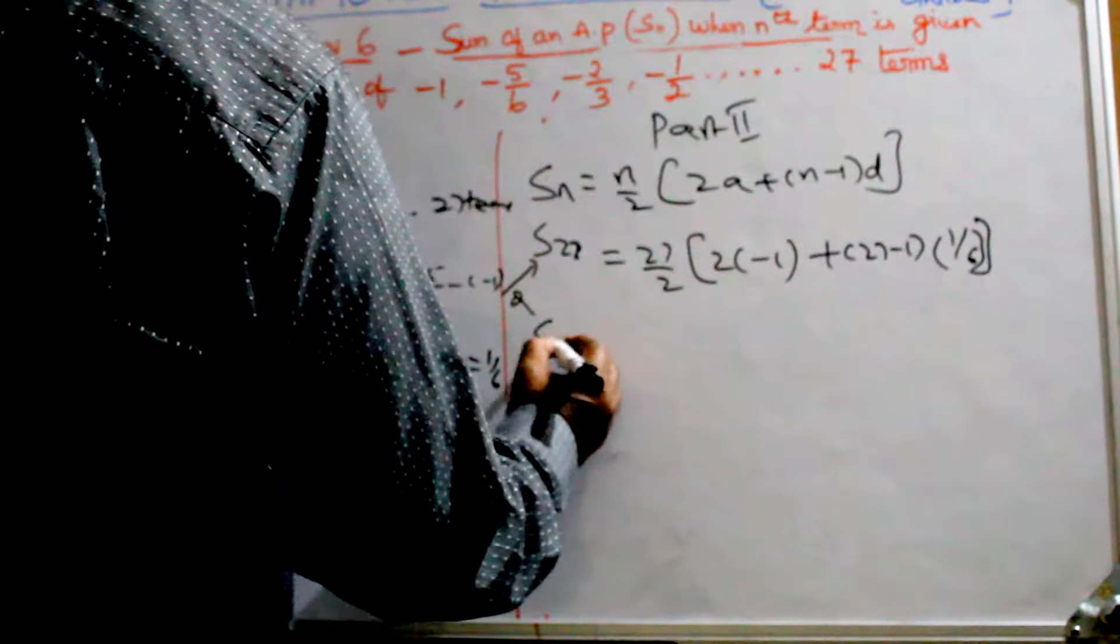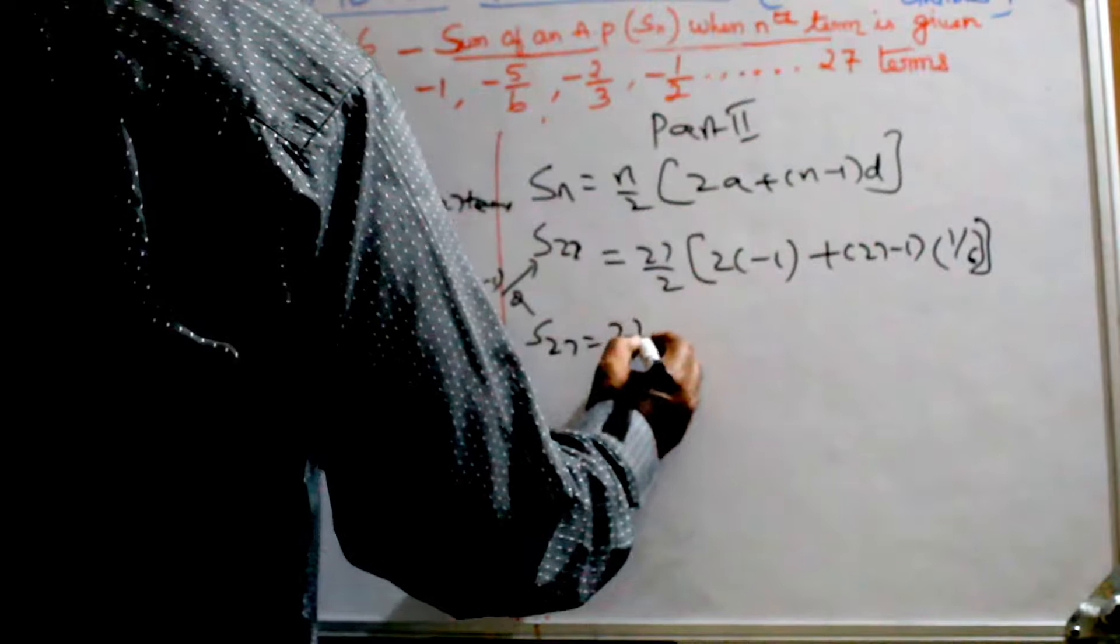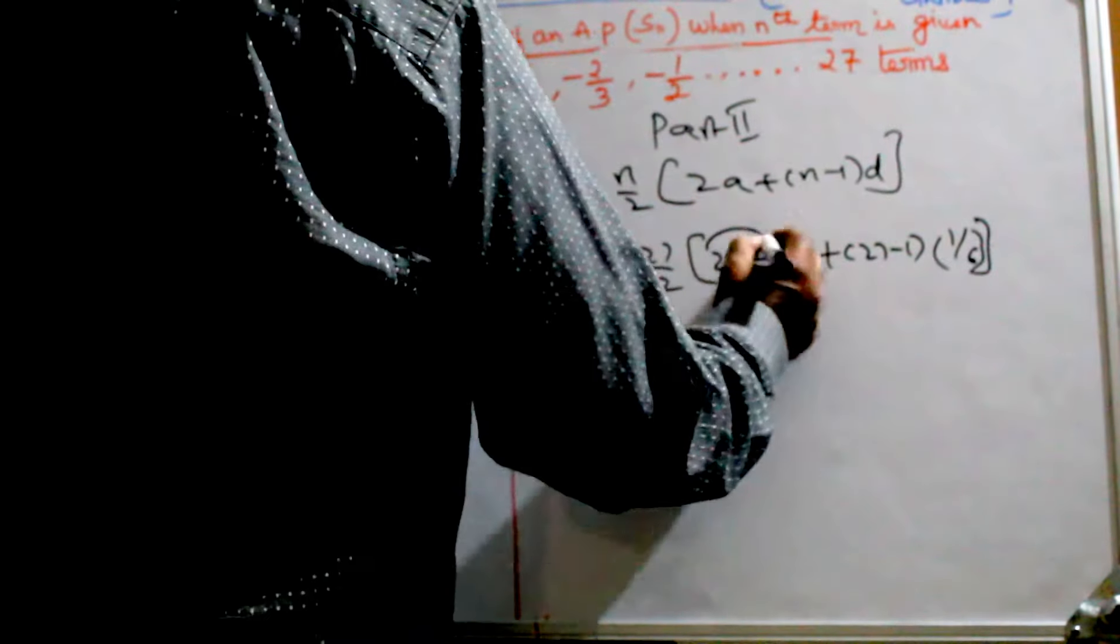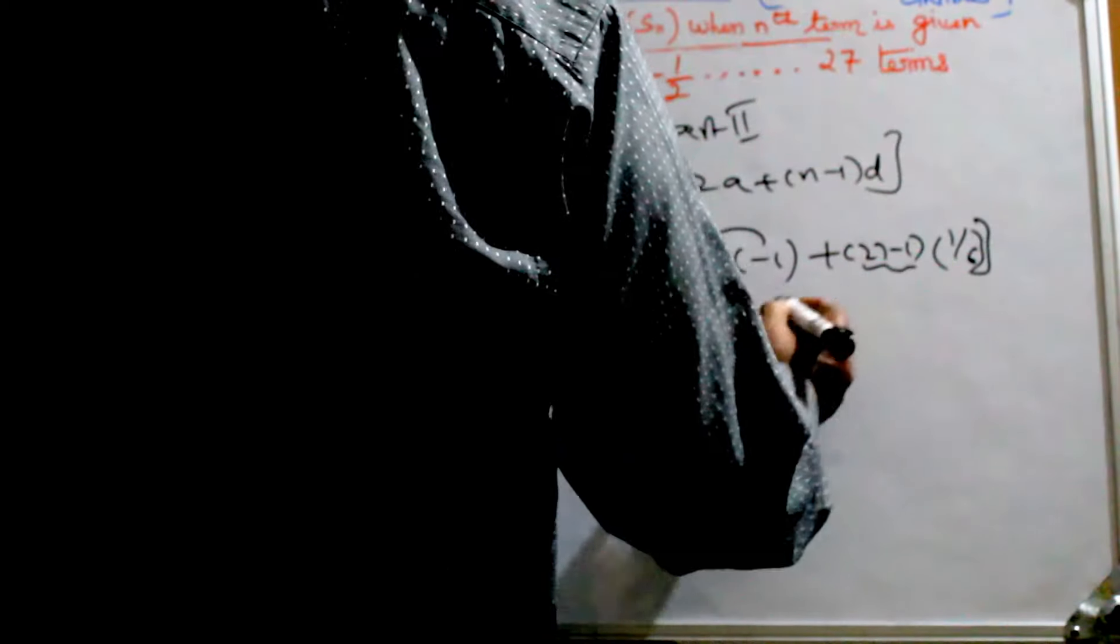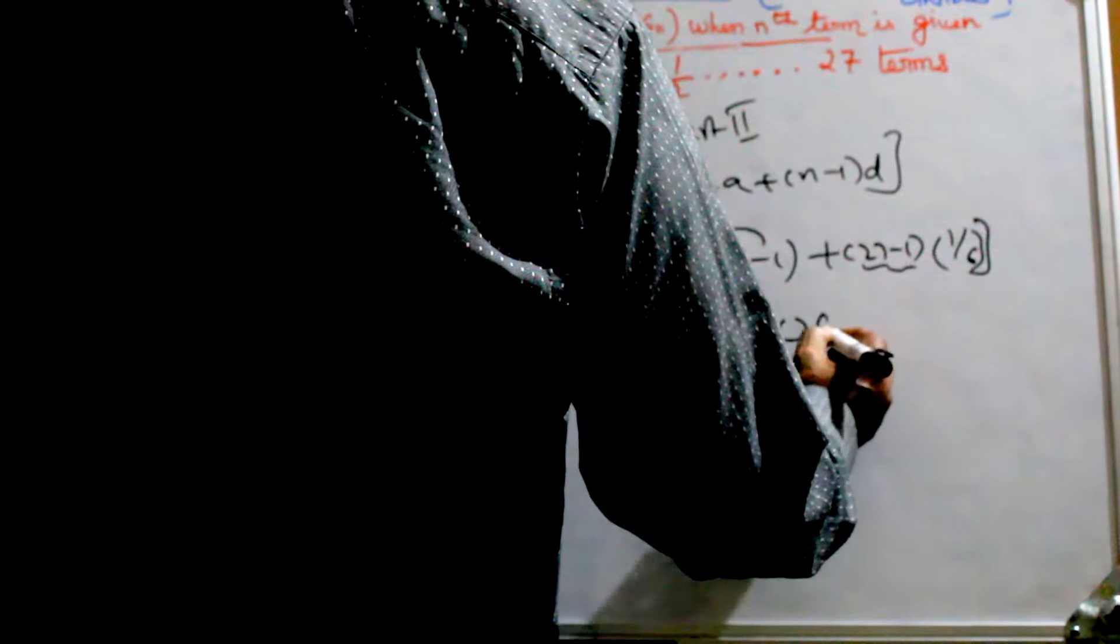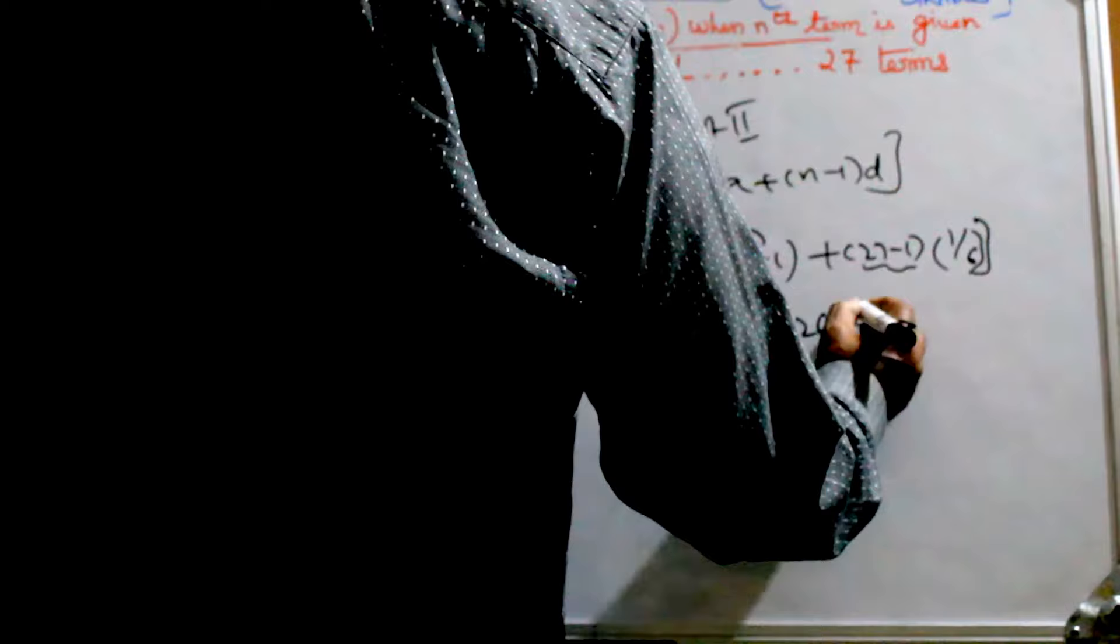Right. Now S27 equals 27/2 times [2 times (-1) is -2, plus 26 times 1/6].